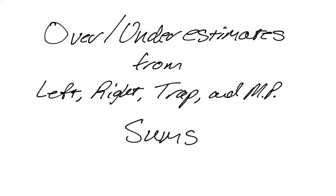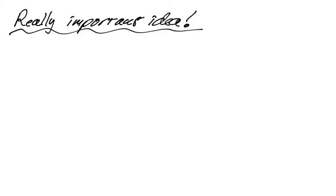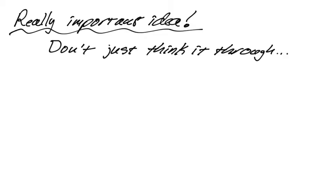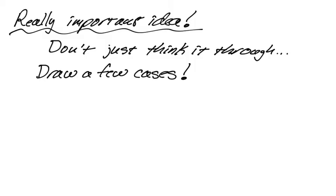In this video we are going to talk about over and under estimates from left, right, trapezoidal, and midpoint sums. This is a really important idea — it's really a graphical thing. What I want you to do is not just think it through as you're trying to figure out if it's an over or an underestimate, but actually draw a few cases. I'm going to show you what I mean by that as we go through this.